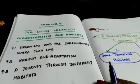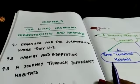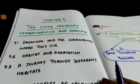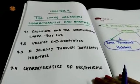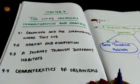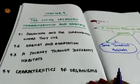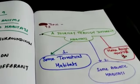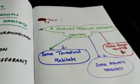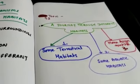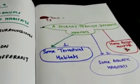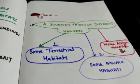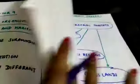Good morning sixth class. Today we are dealing with chapter number nine, the living organisms, characteristics and habitats. In the chapter we have total four subtopics. We have already completed 9.1 and 9.2. Today we are going to complete 9.3, a journey through different habitats. In this section we have three subtopics: some terrestrial habitats, some aquatic habitats, and home assignment number three.